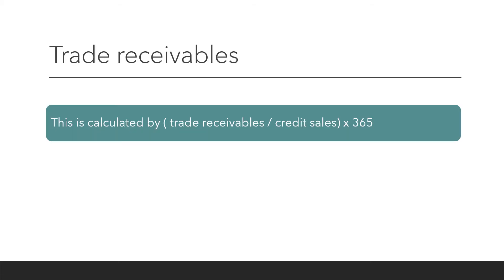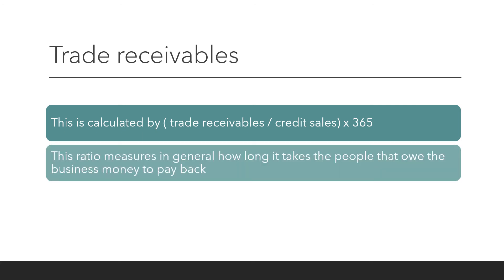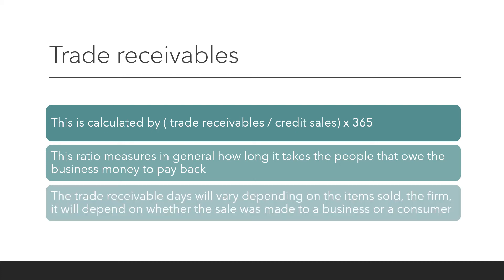Trade receivable days. This is calculated by doing trade receivables divided by credit sales, times by 365. This ratio measures in general how long it takes the people that owe the business money to pay back. The trade receivable days will vary depending on the items the business sells, and whether the sale was made to a business or a consumer.